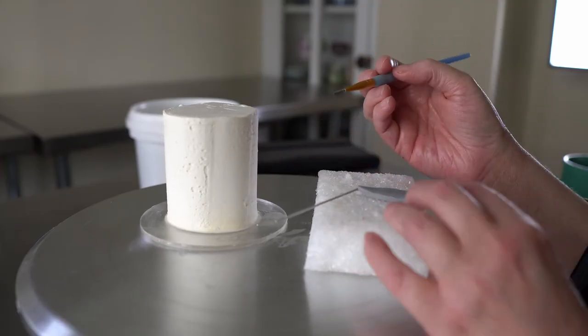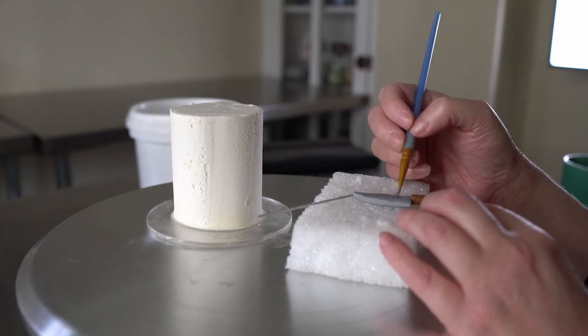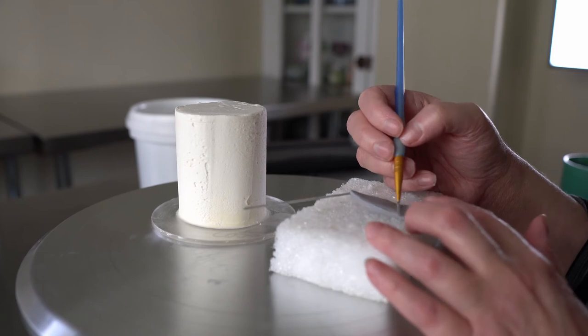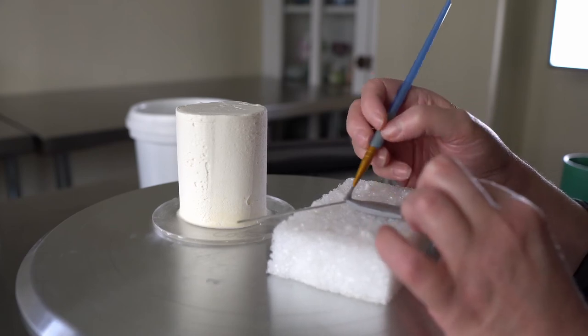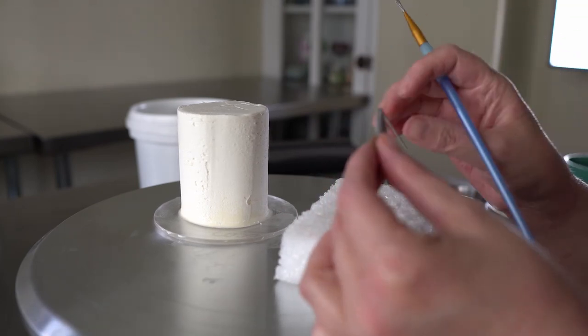We're going to keep working on our little bloody knife cake. I'm going to go in on my dry gum paste piece and paint on some silver so that knife has a little shine. I'm going to get the top ridge.